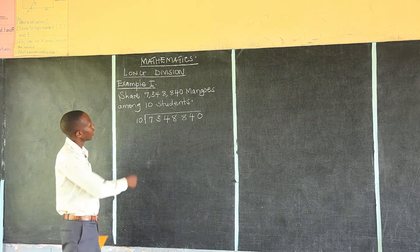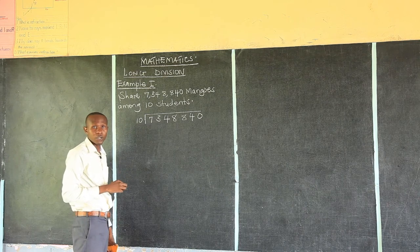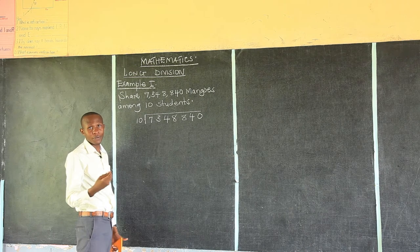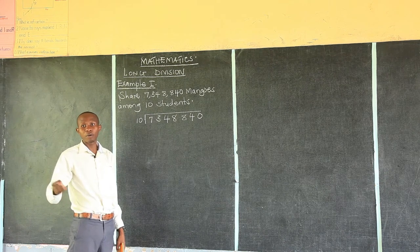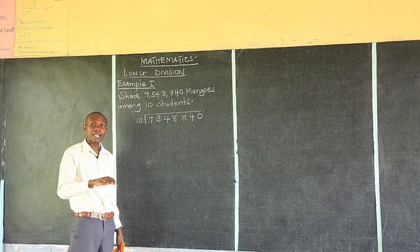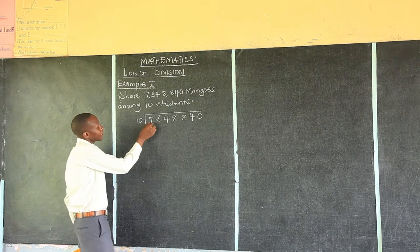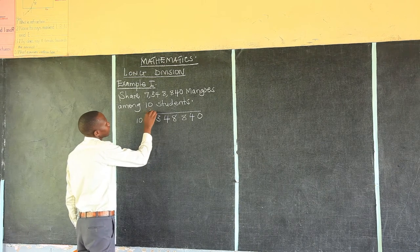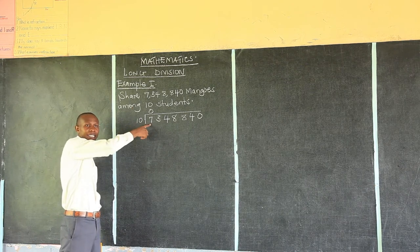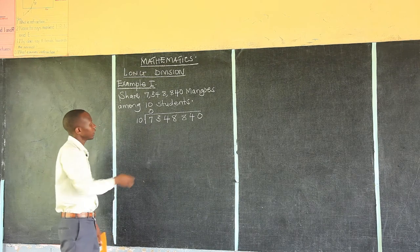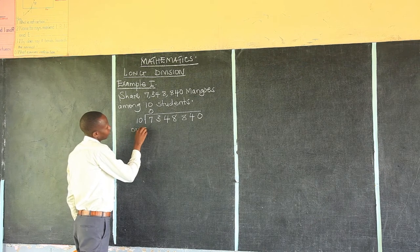Any digit inside the long division sign is supposed to be divided by the number outside. We look at the first digit: 7. So we have 7 divided by 10. When you have 7 mangoes and need to give them to 10 people, the mangoes are less than the number of people. So everyone will get 0. We say 7 divided by 10 — everyone takes 0, because 7 is less than 10 and cannot be exactly divided by 10.